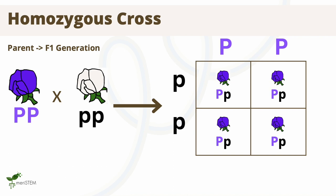Each of these individual squares represents a 25%, or 1 in 4 chance, of that genotype being found within the offspring. In this case, there's a 100% chance of the offspring being heterozygous, or big P, little p, meaning that they will all be purple. This was consistent with Mendel's observations, where all of his F1 flowers were purple.